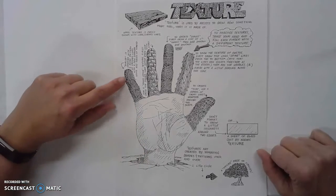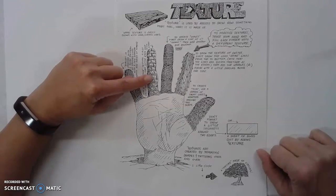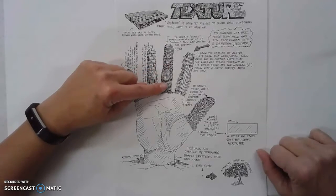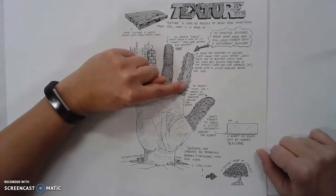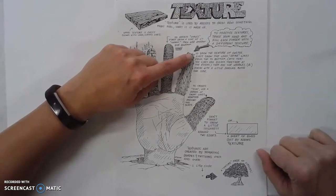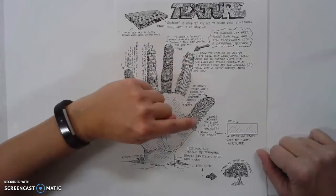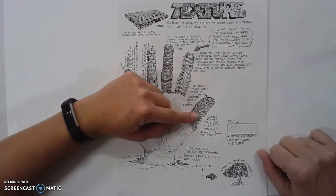And then this one is supposed to look like burlap, and then we have a brick wall, scales, and then like a cactus with the little spiky thorn pieces, and then this is supposed to look like fur.